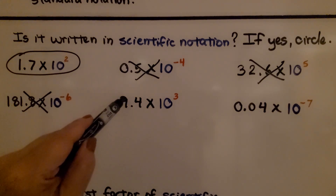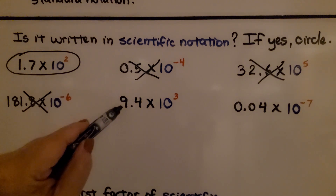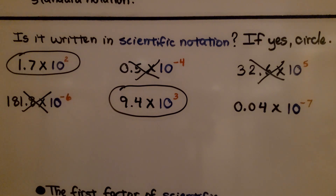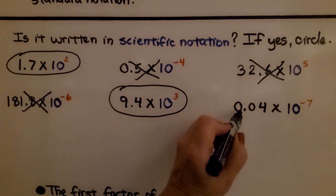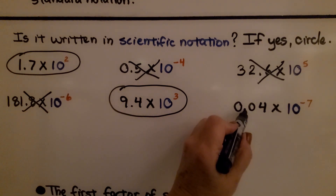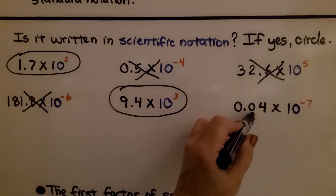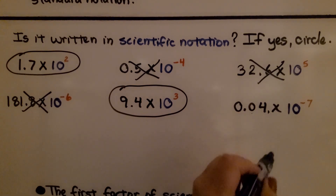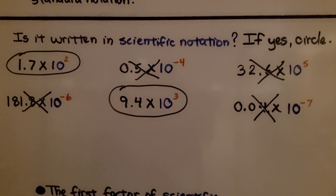Here we have digit, decimal, digit — yes! And it's greater than or equal to 1 and less than 10, so that is scientific notation. Here we have a zero, then a decimal, then a zero — that is not scientific notation. The decimal would have been back further, so that's not scientific notation.